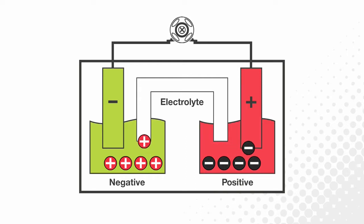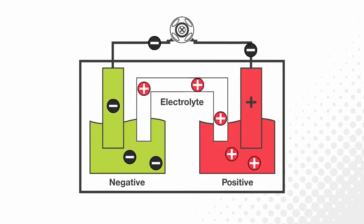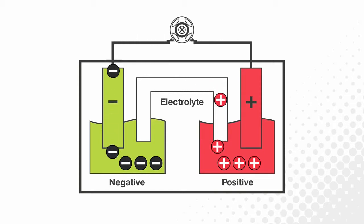This process is reversed during the battery charge cycle, where the ions are driven out of the positive plates and back into the electrolyte, ready for the next discharge cycle requirement.